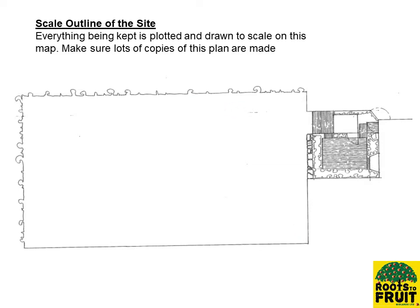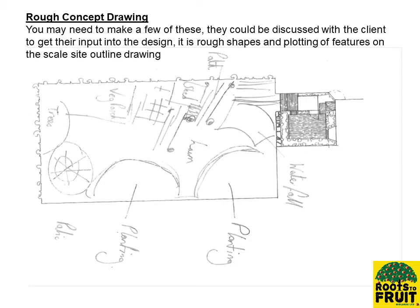You will need to make quite a few copies of this outline because this is what you are going to start designing on. You will then create concept designs — if you've got a customer, you're doing it to scale or in proportion using the scale outline plan. You start to play about with what types of shapes you want. This is where you start to form it on the basis of informal and formal gardens, a blend of the two, and also within styles and themes — whether it's an English cottage garden, Mediterranean garden, or jungle.